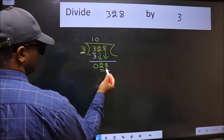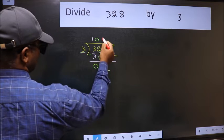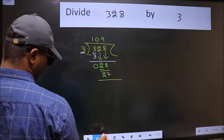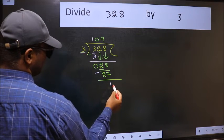Now 28. A number close to 28 in the 3 table is 3 times 9 equals 27. Now we should subtract. We get 1.